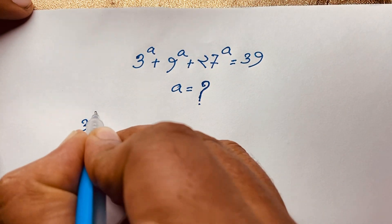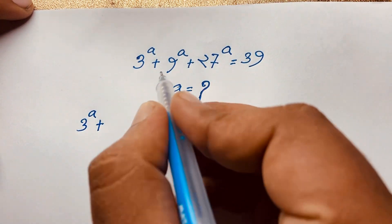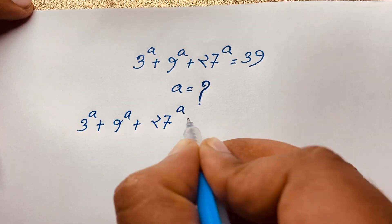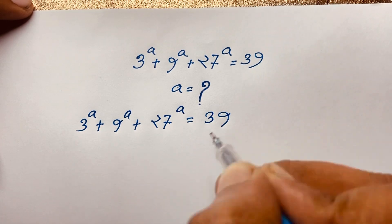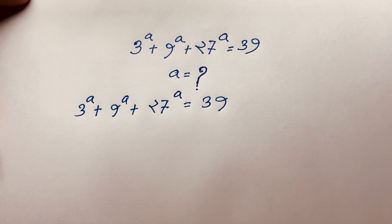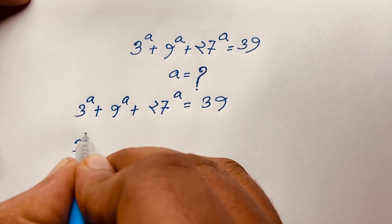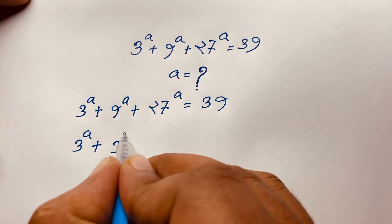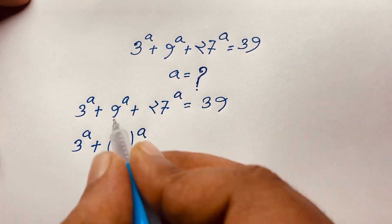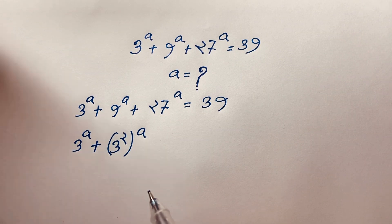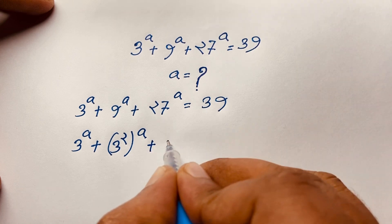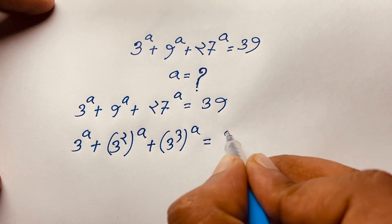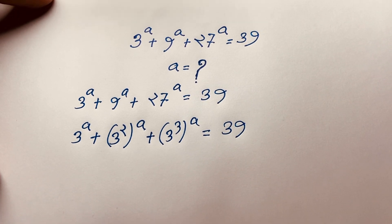Our equation is: 3 to the power a, plus 9 to the power a, plus 27 to the power a equals 39. Now I'll rewrite the bases as powers of 3. Since 9 equals 3 squared, we have 3 squared whole to the power a. And since 27 equals 3 cubed, we have 3 cubed whole to the power a, all equal to 39.